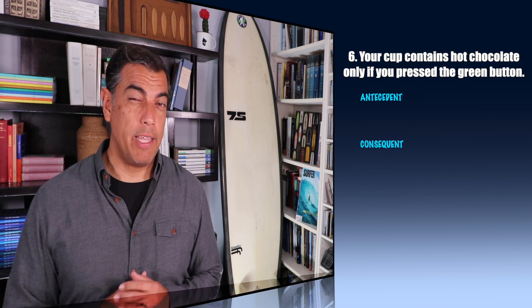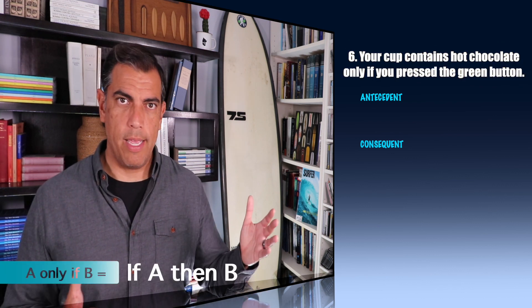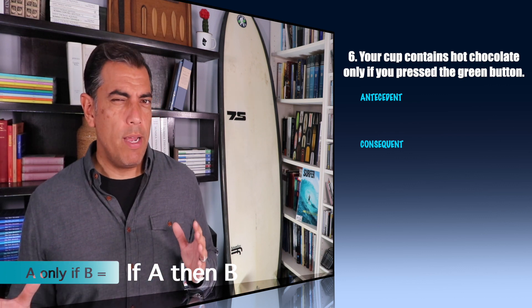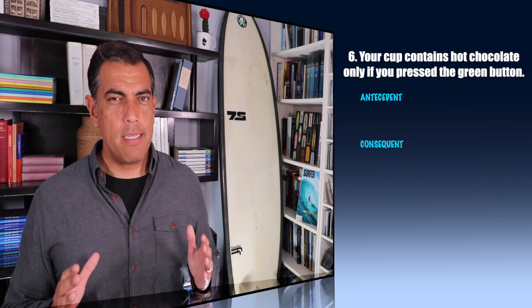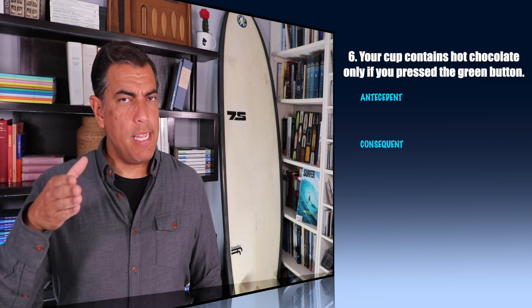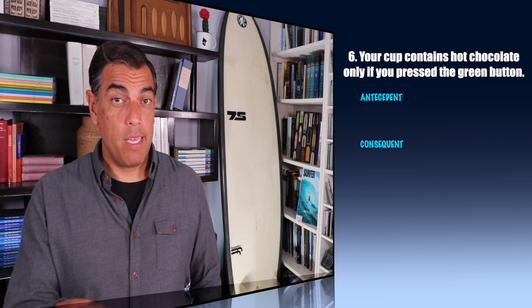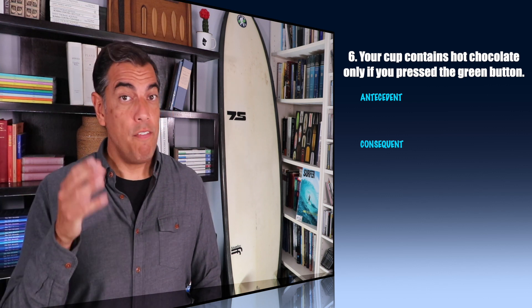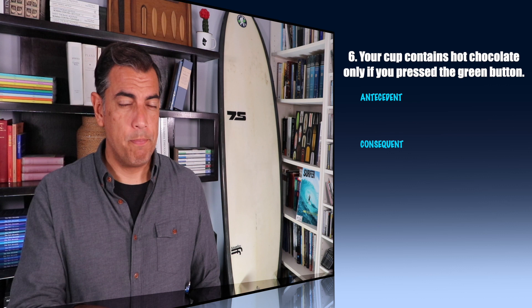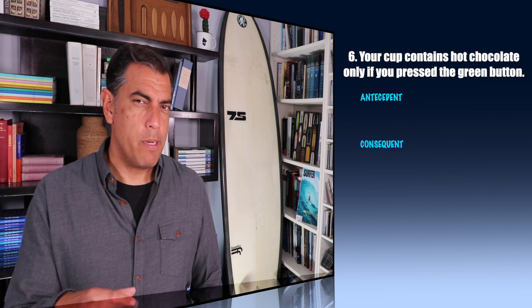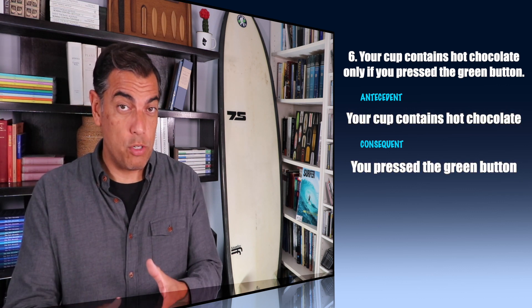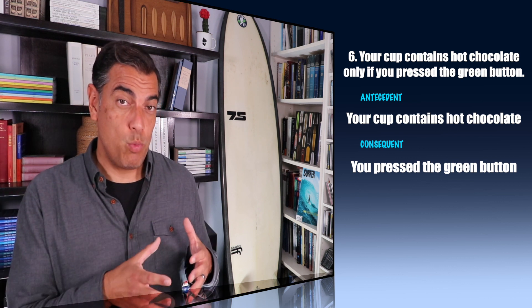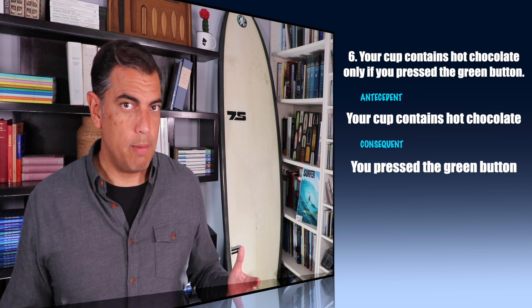Number six: your cup contains hot chocolate only if you press the green button. Again, it's one of those A only if B constructions, so we know it's going to be if A then B. Does it mean that if you have hot chocolate in your cup, then you must have pushed the green button? Or that if you push the green button, you must have hot chocolate? It's really the former — if that thing in your cup is hot chocolate, you must have pushed the green button. A only if B means if A then B. That's all we've got for conditionals.